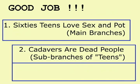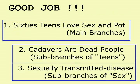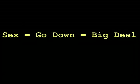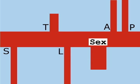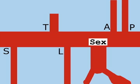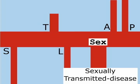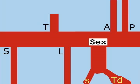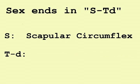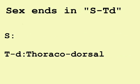Good job! You've got the first two parts, so just one more sub-branch to go. Remember that when you have sex with someone, you go down on them, and it's a big deal. That's why the Subscapular Trunk — sex — goes down and is a big deal; it's a big trunk because it has sub-branches. At the end of sex there is a sexually transmitted disease, or STD. Sex ends in STD: Scapular Circumflex Branch, Thoracodorsal Branch.